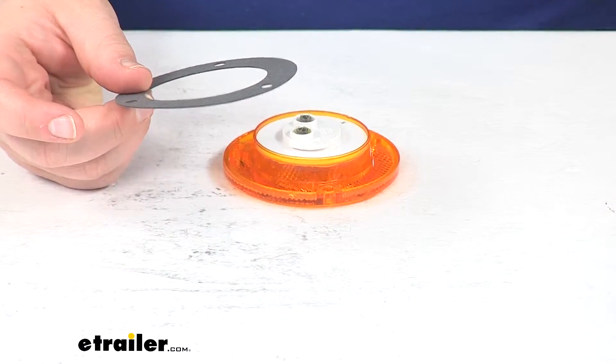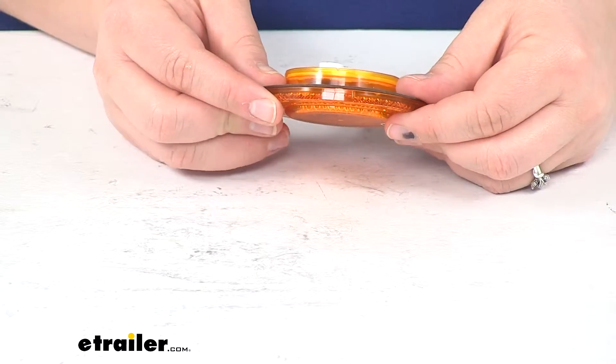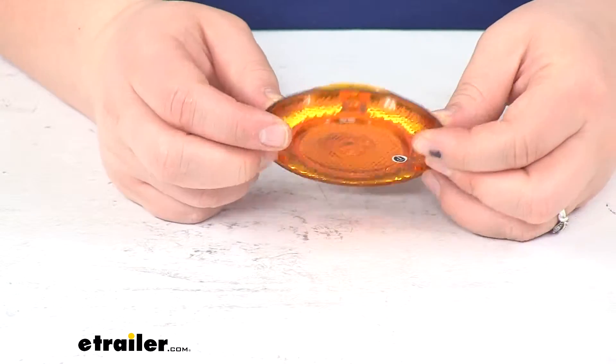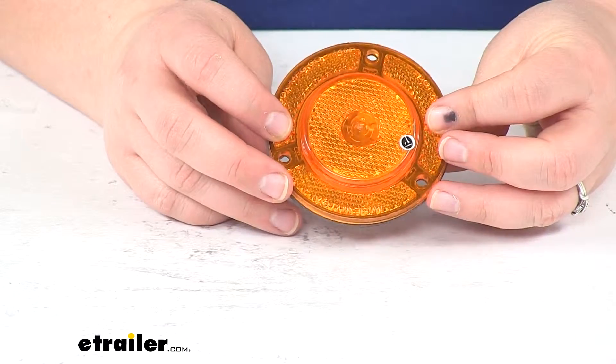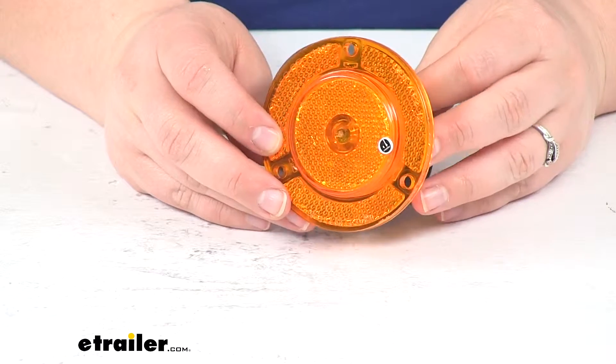So it might not be water tight, but it'll help to just seal that up, protect our light a little bit whenever we go to mount that in place. It also helps to kind of give a backing to our reflectors, makes them a little bit more noticeable.